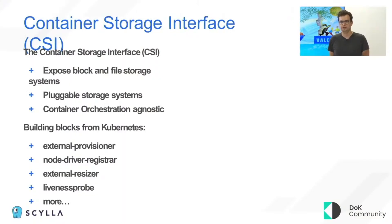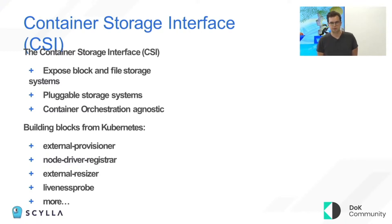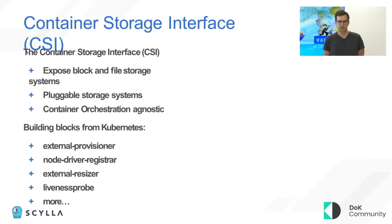CSI stands for Container Storage Interface. It basically allows third-party storage providers to expose their block and file storage systems in a pluggable way, and it is implemented by multiple container orchestration systems like Mesos and Kubernetes. On Kubernetes, when you write such a driver, you don't need to touch any Kubernetes code whatsoever, because Kubernetes provides several building blocks that run as a sidecar to your driver and manage everything Kubernetes-related for you.